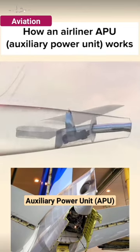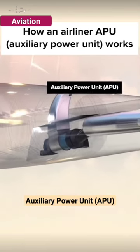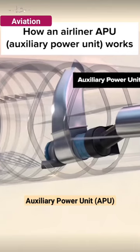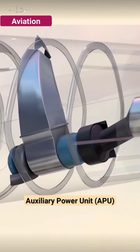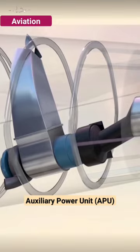APU is a backup power source that can supply energy to things like cabin air conditioning, cockpit avionics, and so on when the plane is grounded and not yet connected to an airport power source.